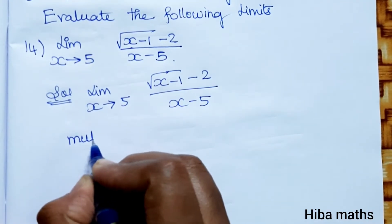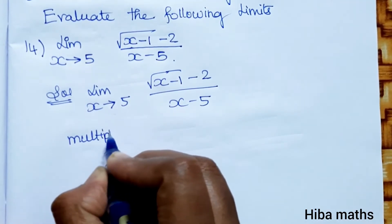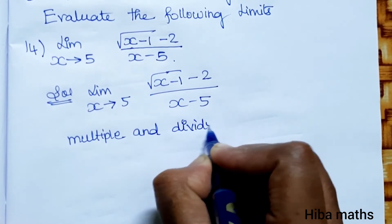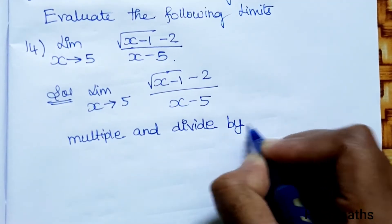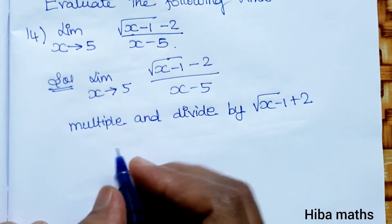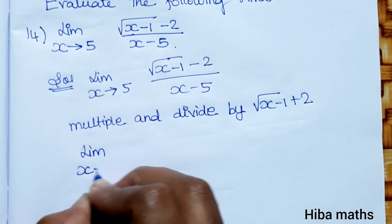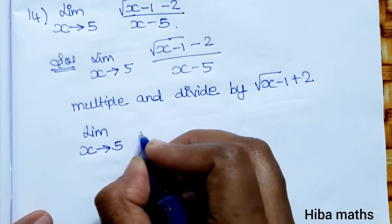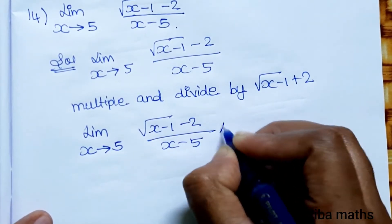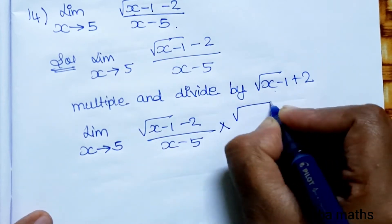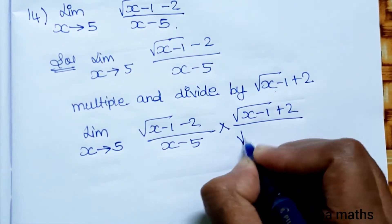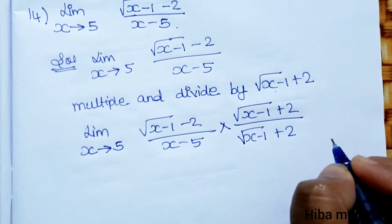Next, we will multiply and divide by the conjugate: root of (x minus 1) plus 2. So the expression becomes limit x tends to 5 of [root (x minus 1) minus 2] divided by (x minus 5), multiplied by [root (x minus 1) plus 2] divided by [root (x minus 1) plus 2].